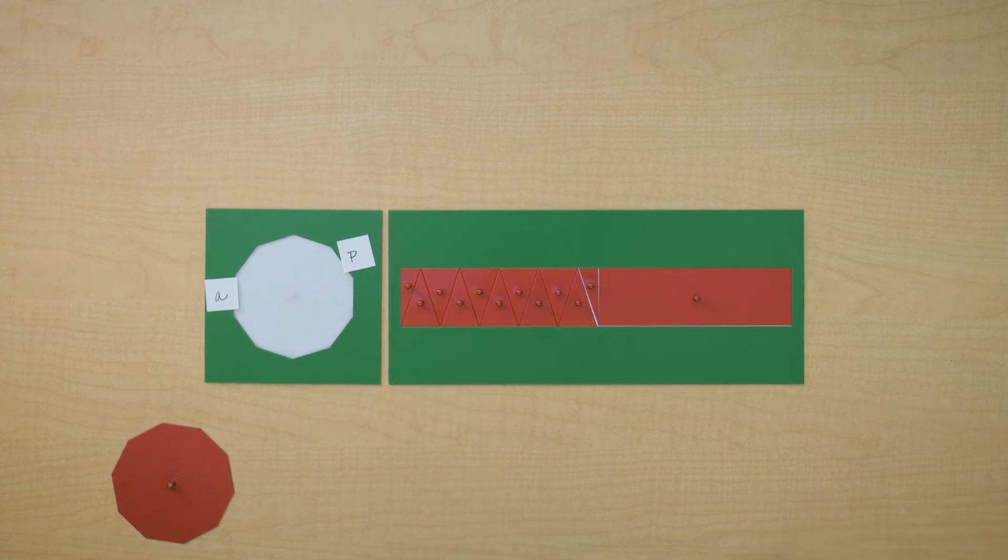So if we want to find the area of a decagon, we could take the perimeter divided by two times the apathem.